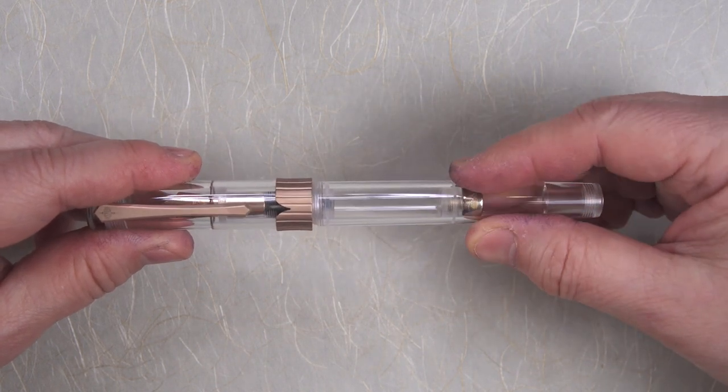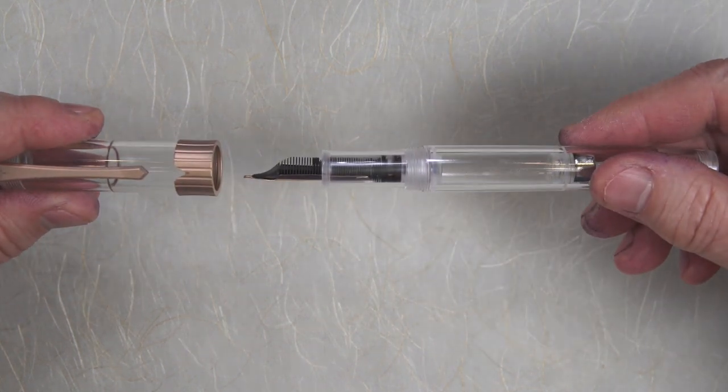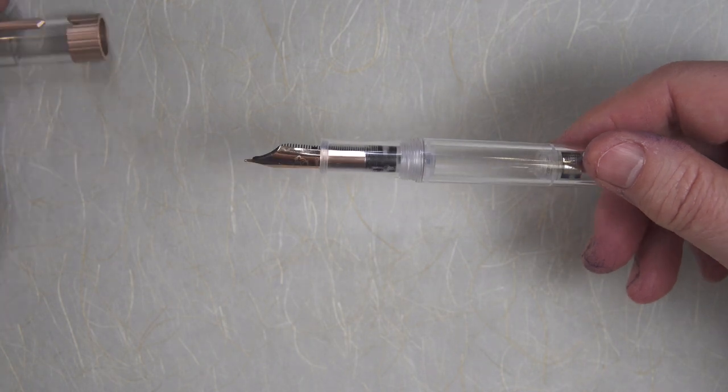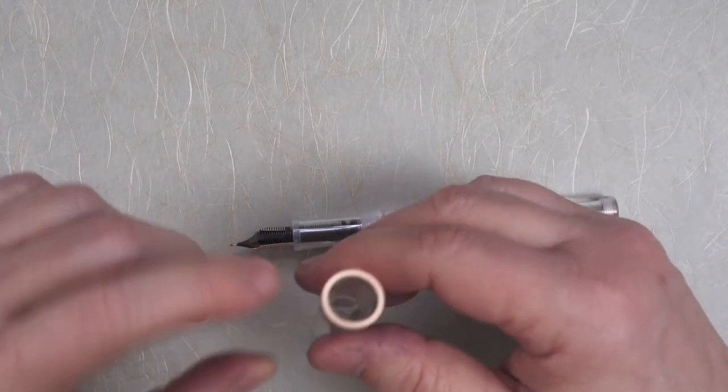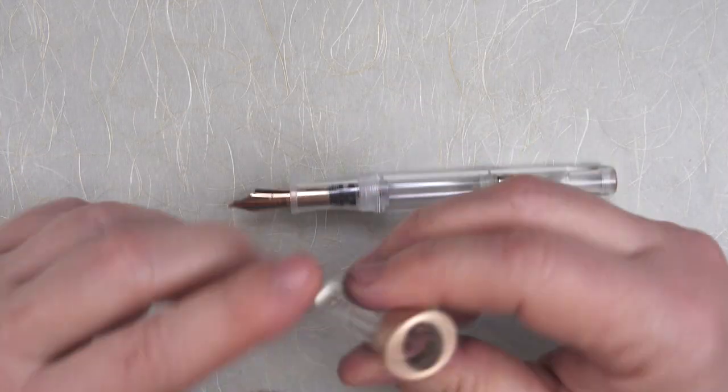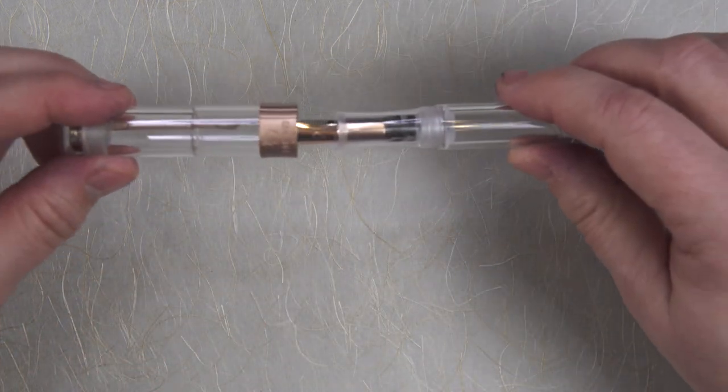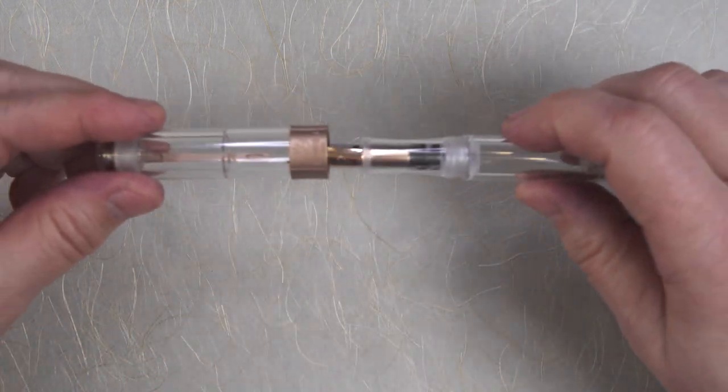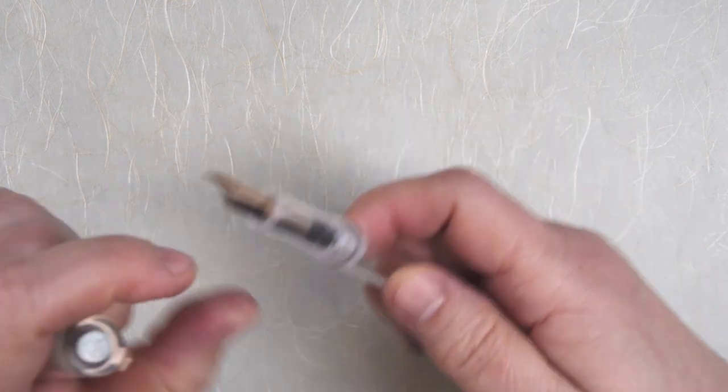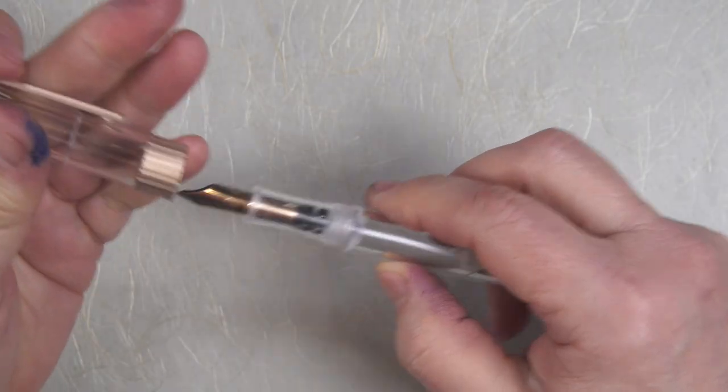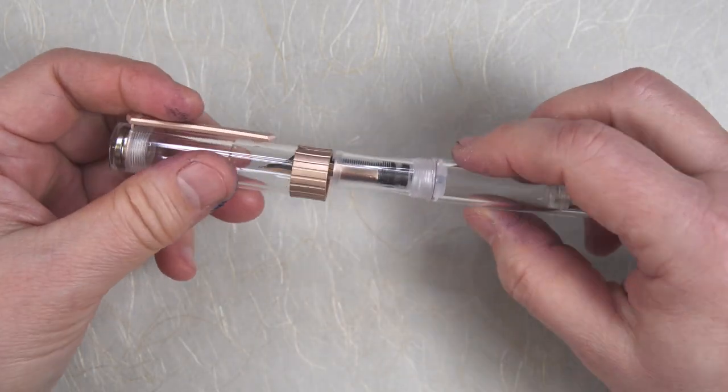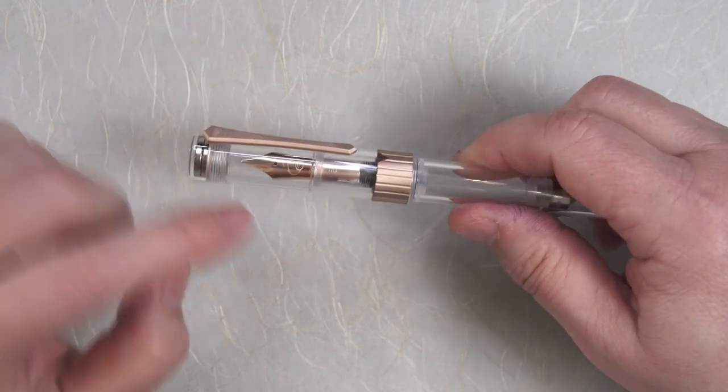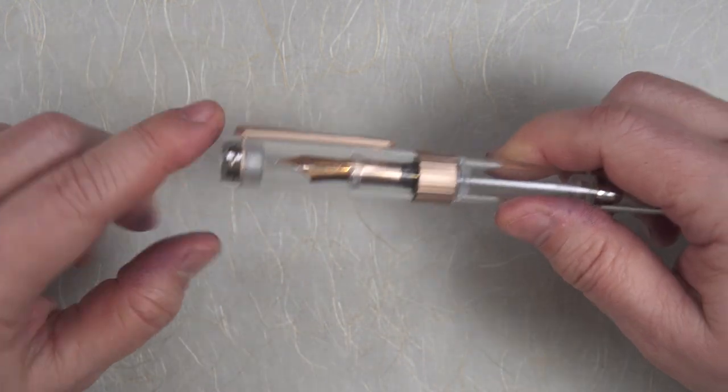The cap comes off in just a little over one full turn. There's no inner lining or inner cap inside of the cap. Instead the section here when you put the cap on ends up going up against a step inside of the cap. And that kind of makes the seal. It actually makes for a nice clean look.